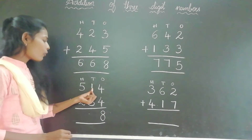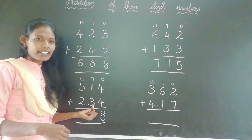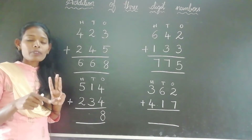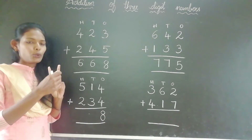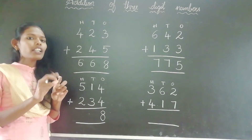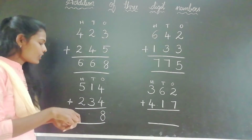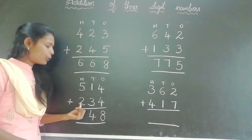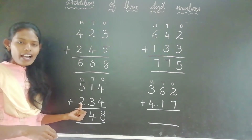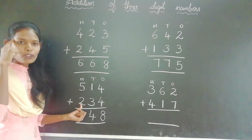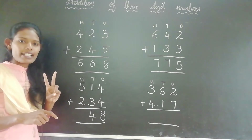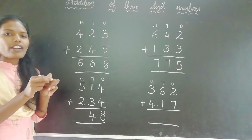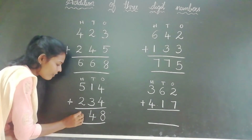Next, 1 and 3 — these numbers are at the tens place. Keep 1 in your mind and take 3 fingers. What comes after 1? 2, 3, 4. The answer is 4. Next, 5 and 2 — these numbers are at the hundreds place. So keep 5 in your mind and take 2 fingers. What comes after 5? 6, 7. The answer is 7.